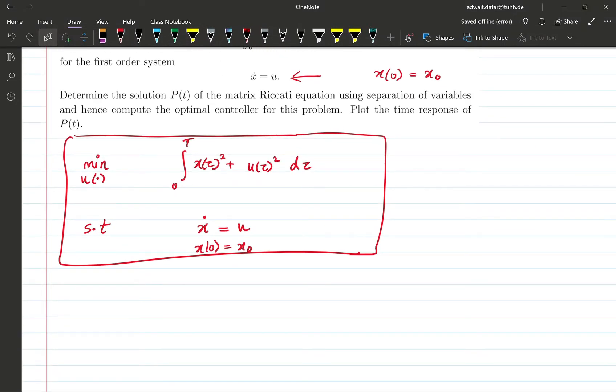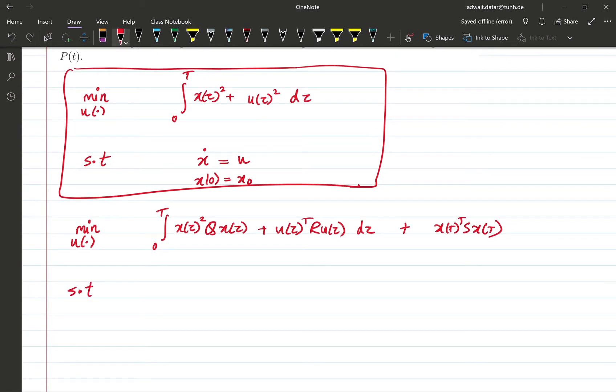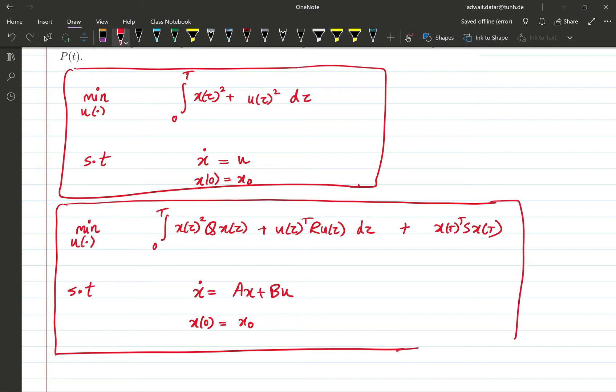Now let's write down also the general LQR problem that we have seen in the lectures. Again, we are looking for the best possible input trajectory that minimizes this cost subject to the dynamics of the system and the initial conditions. So this is the LQR or linear quadratic regulator problem with a finite horizon cost.